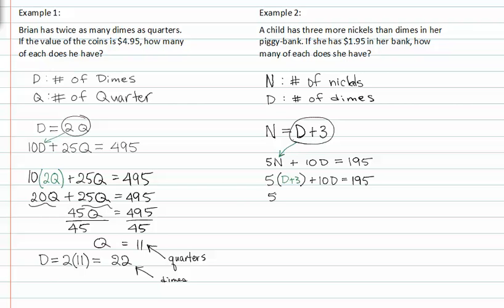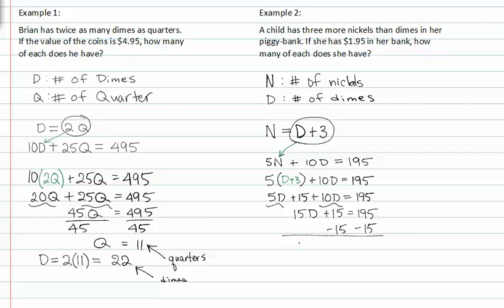Distributing the five through, we get five d plus fifteen, plus ten d is equal to one ninety-five. Adding like terms, we get fifteen d plus fifteen is equal to one ninety-five. Subtracting fifteen from both sides gives us fifteen d is equal to one eighty.